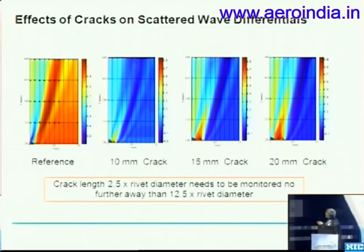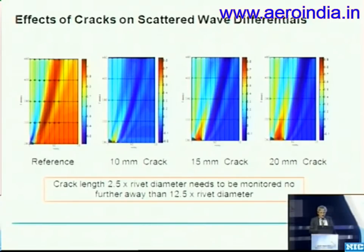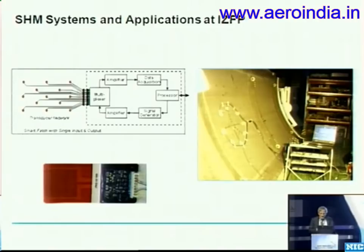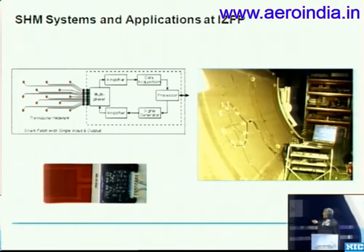You can see a concentration near the cracks — a 15-millimeter crack and a 20-millimeter crack. We found that we need a crack length of about 2.5 times the rivet diameter to be monitored no further than 12.5 times the rivet diameter away. So we need to monitor quite close to the rivets. At Fraunhofer ICFP, we have developed such systems with sensors and electronics that can be integrated into structures, and we've conducted tests on aeronautical structures.